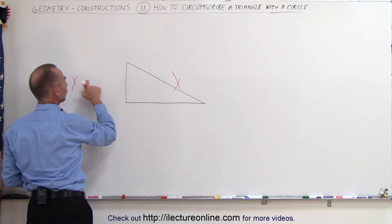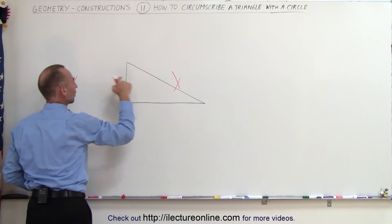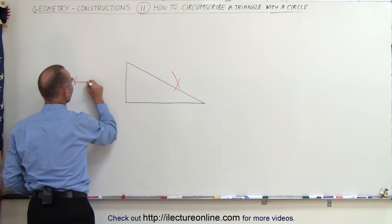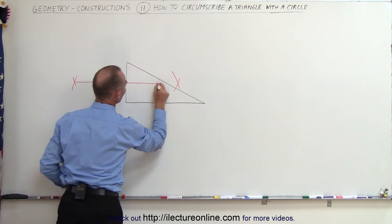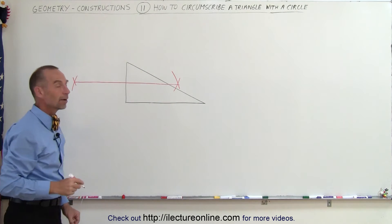Now when we connect these two places where the arcs cross, you have a line that exactly divides this line into two halves.